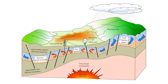The high temperature and pressure in the earth's interior cause some rocks to melt and the solid mantle to behave plastically, resulting in portions of the mantle convecting upward since it is lighter than the surrounding rock. Rock and water is heated in the crust, sometimes up to 370 degrees Celsius or 700 degrees Fahrenheit. With water from hot springs, geothermal energy has been used for bathing since Paleolithic times and for space heating since ancient Roman times, but it is now better known for electricity generation. Worldwide, 11,700 megawatts of geothermal power was available in the year 2013. An additional 28 gigawatts of direct geothermal heating capacity is installed for district heating, space heating, spas, industrial processes, desalination and agricultural applications.